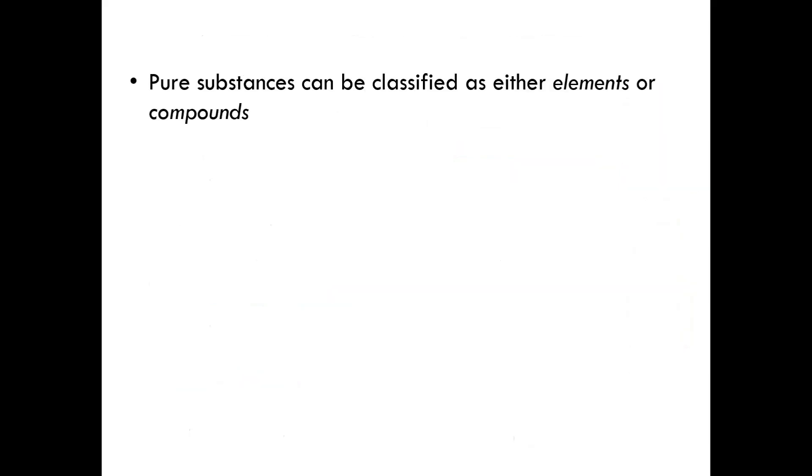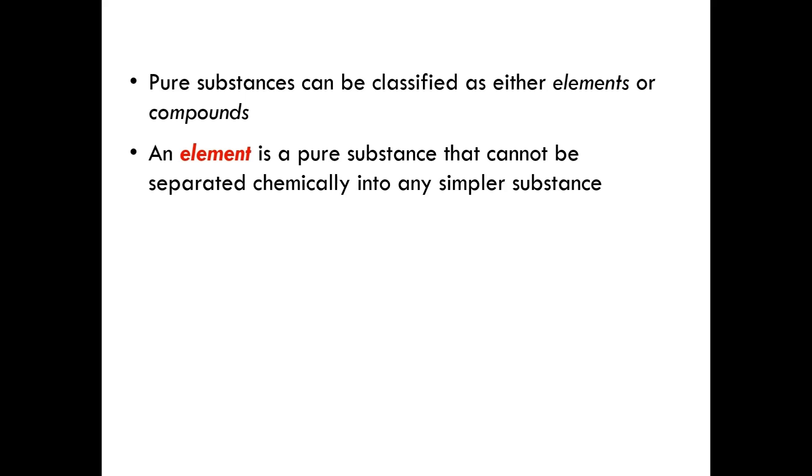Pure substances can be further classified as either elements or compounds. An element is a pure substance that cannot be separated chemically into any simpler substance. So, for example, gold, copper, sodium, oxygen. Every single one of these is an element on the periodic table, and they're isolated from one another as pure substances.